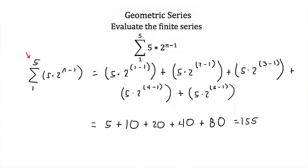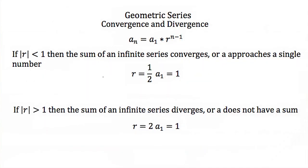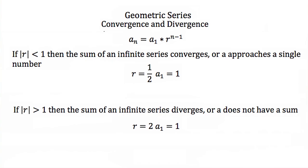And that would be your solution — 155. That's how you evaluate a finite geometric series written in summation notation. Now we've talked about finding the summation of finite geometric series. When we try to find a value for an infinite geometric series, we talk about convergence and divergence.